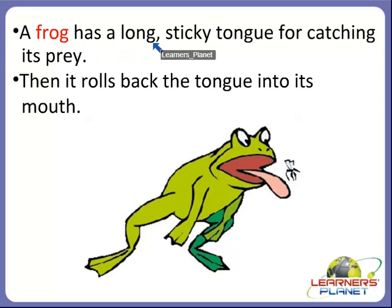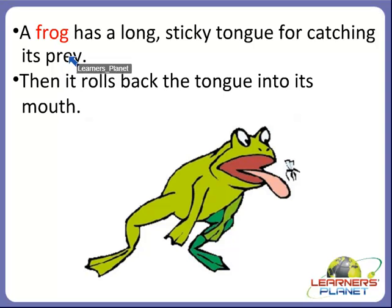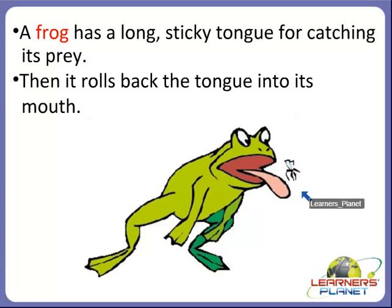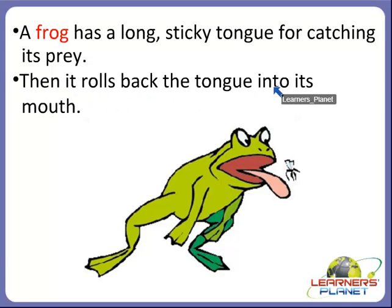A frog has a long sticky tongue for catching its prey. Prey is an animal which is killed by another animal for food. The insect is the prey of the frog. The frog catches the insect with its long sticky tongue, then rolls the tongue back into its mouth and eats the insect.